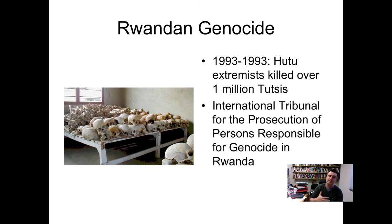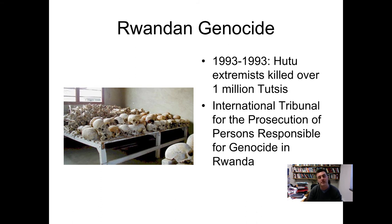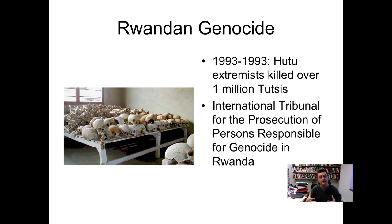The Rwandan genocide: within a period of three months in 1994, Hutu extremists killed over one million Tutsis and moderate Hutus. It led to the International Tribunal for the prosecution of persons responsible for genocide in Rwanda. Rwanda is a tiny country — smaller than the size of Maryland — and they used the tribunal for the worst offenders, but also employed different forms of restorative justice because as a society they needed to be able to forgive the past and come to terms with those atrocities in order to move forward.